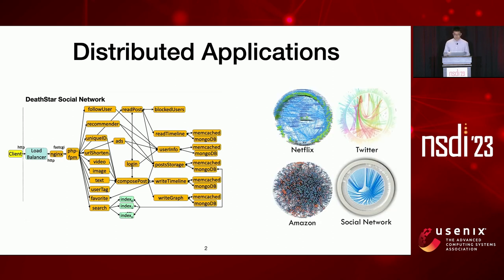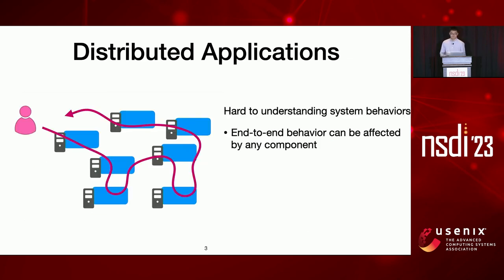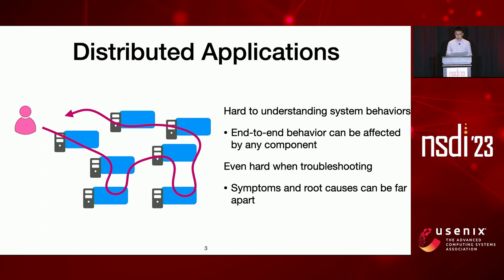In real-world distributed systems, such an architecture could be very complex, involving more than thousands of distinct system components. A top-level user interaction results in execution across many of those components. Although large-scale systems are designed in a decoupled way, as an application developer or system operator you still need a global view of end-to-end behaviors, because they can be affected by any single component. This is especially hard when troubleshooting — a problem can arise in one part of the application but the root cause might be elsewhere. A faulty or slow component can influence others and bubble up to affect end-to-end correctness or performance.